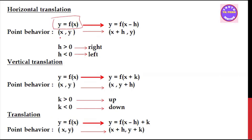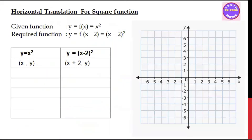This is the point that we have to write: x, y. And we have to write x plus h, y. So if you write x, y for the x-squared function, then you write x minus h.